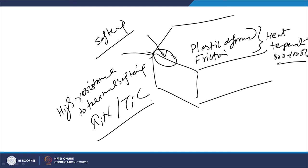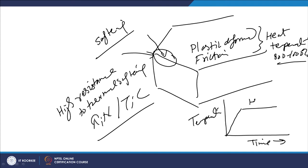The kind of thermal cycle used for the CVD process is as follows: on the x-axis we have time and on the y-axis we have temperature. After putting in the component and creating the vacuum within the chamber, the temperature is increased and held for some time — this is the holding time. Once the holding time is over, for absorption of the gases and completion of the chemical reactions to form the required compounds, the system is cooled. This is the thermal cycle used for performing the chemical vapour deposition process.